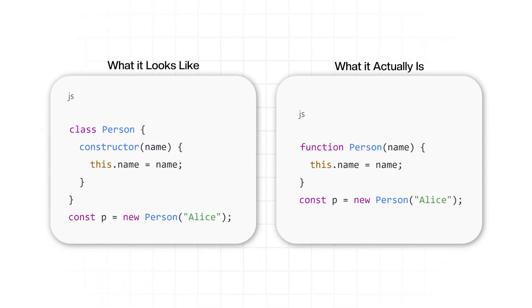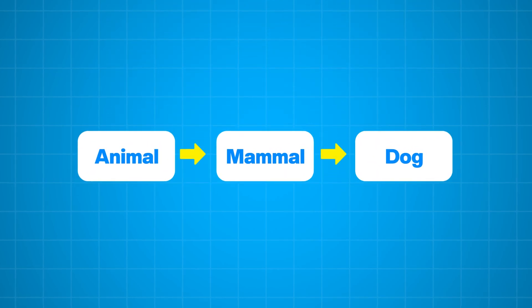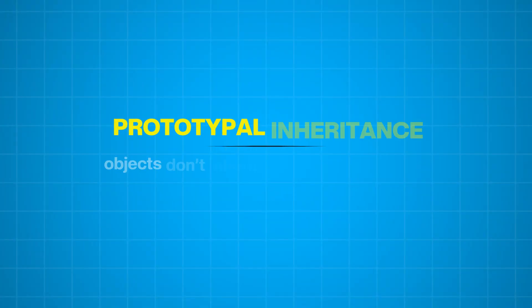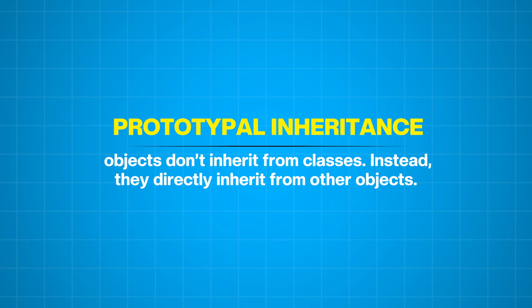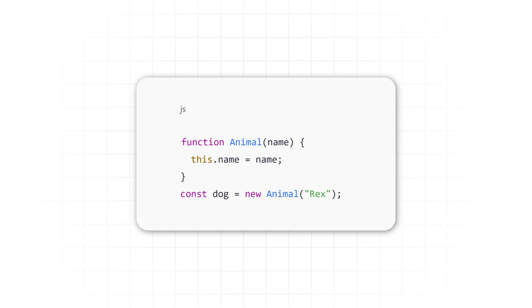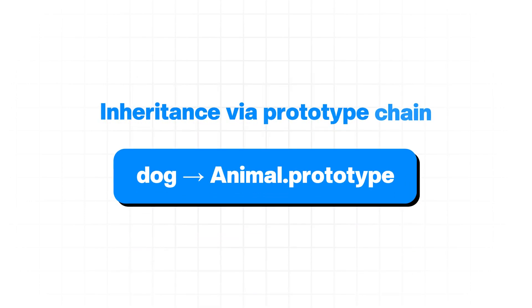JavaScript pretends to have classes, but it really doesn't. JavaScript classes are just syntactic sugar over constructor functions. JavaScript uses prototypal inheritance, which is different from the classical inheritance model found in languages like Java or C++. Classical inheritance involves defining a class as a blueprint for creating objects, with a clear hierarchical system where classes inherit from other classes. Prototypal inheritance means objects don't inherit from classes — instead they directly inherit from other objects. Before ES6, JavaScript didn't even have the class keyword; it just had constructor functions called with the 'new' keyword, and objects were linked to a prototype object for inheritance.